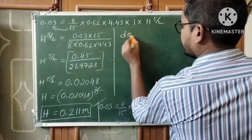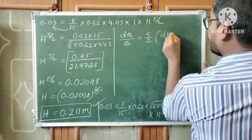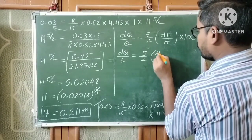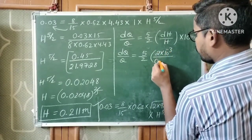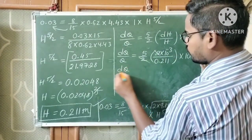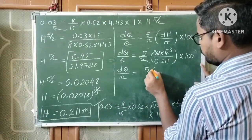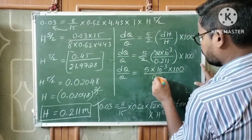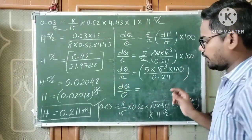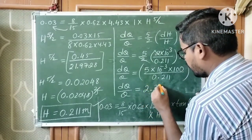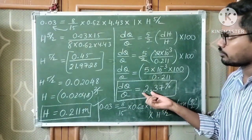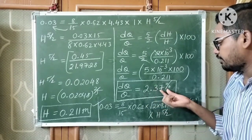Now we can find the percentage error in discharge: DQ by Q equals 5 by 2 into DH by H into 100. Substituting DH equals 2 into 10 to the power minus 3 and H equals 0.211: the 2s cancel, giving 5 into 10 to the power minus 3 into 100 divided by 0.211. The percentage error in discharge is approximately 2.37%. Therefore, the percentage error in discharge for the right-angled V-notch is 2.37%.